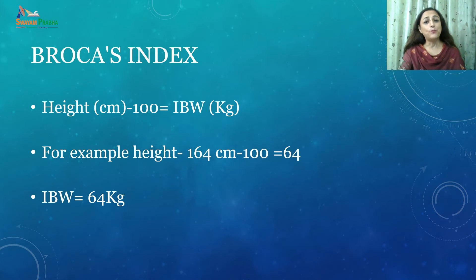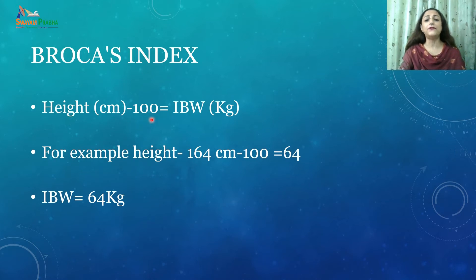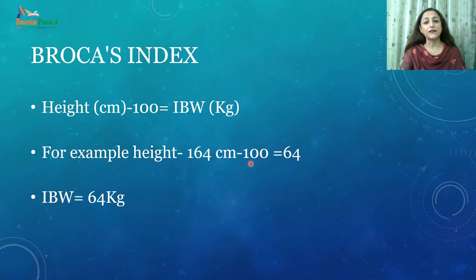Then we have Broca's index, which is fairly easy and accurate to calculate. Here, we take the height in centimeters and deduct 100 to get the ideal body weight in kilograms. For example, if height is 164 cm, we subtract 100 and get 64 — so the ideal body weight for that person is 64 kg.